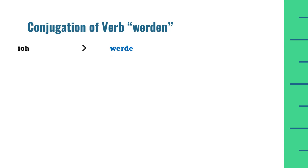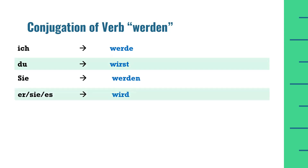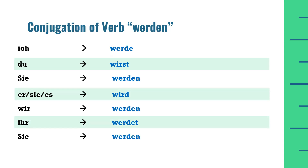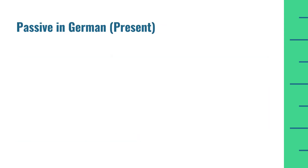Werden ki conjugation different subjects ke lihaaz se: agar subject 'ich' hai to werden ho jayega 'werde'. 'Du' subject ke liye conjugation hogi 'wirst'. 'Sie' — third person singular — ke liye 'wird'. 'Wir' ke liye 'werden' hi rahega. 'Ihr' subject ke liye 'werdet'. 'Sie' (aap log) aur 'sie' (voh log) ke liye bhi 'werden' hi rahega.